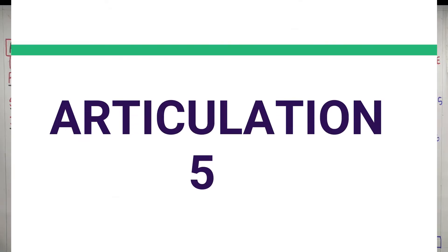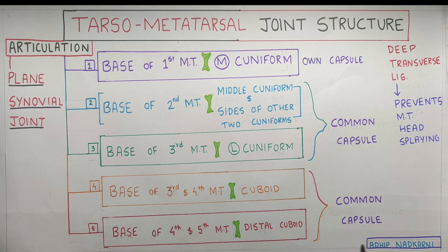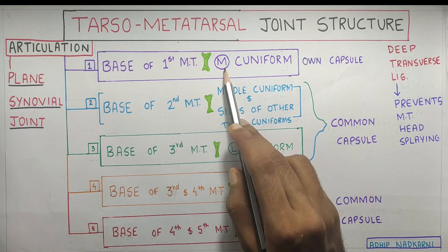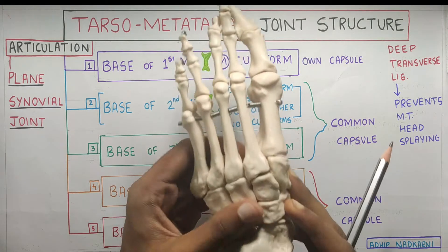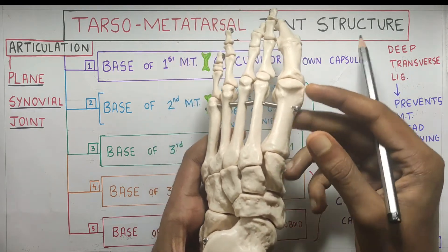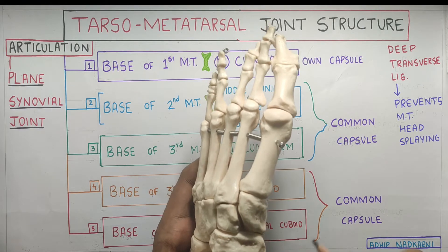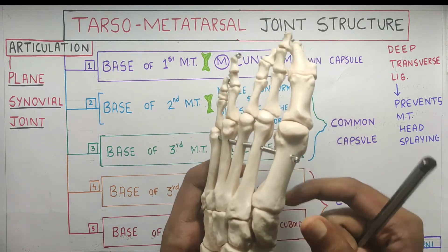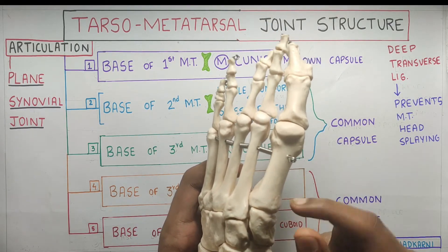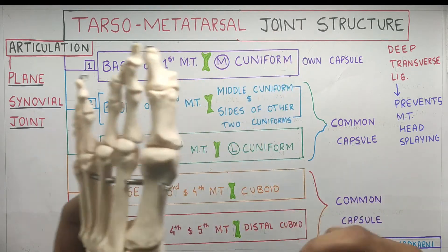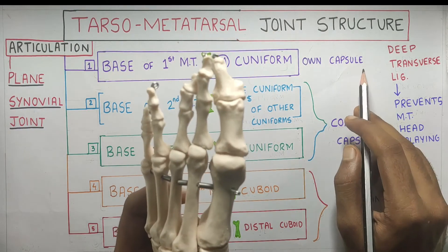Let's start with the articulation between the base of the metatarsals and the tarsal bones. The first articulation takes place between the base of the first metatarsal and the medial cuneiform. If you look at the foot over here, this is your first metatarsal and this is your cuneiform — that bone-to-bone articulation occurs here. This joint has its own capsule.